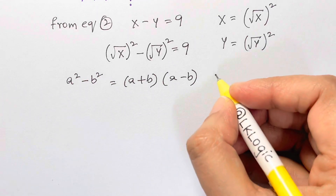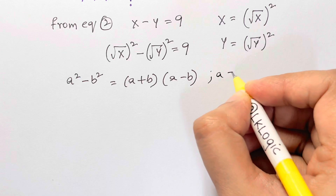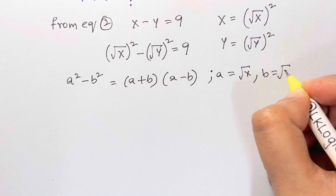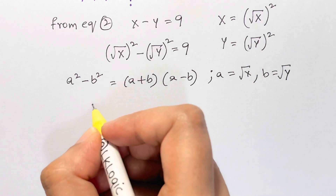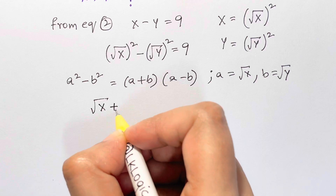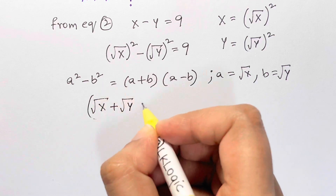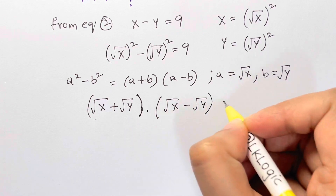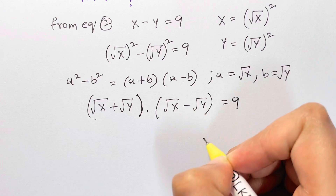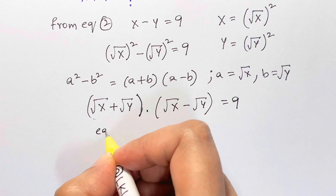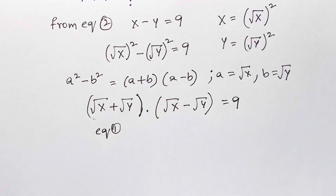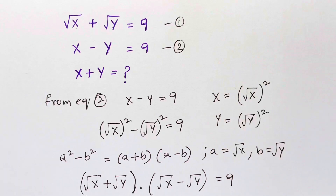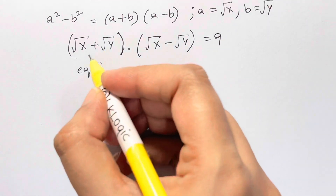Substituting the values, where a equals square root of x and b equals square root of y, we get: square root of x plus square root of y, times square root of x minus square root of y, equals 9.